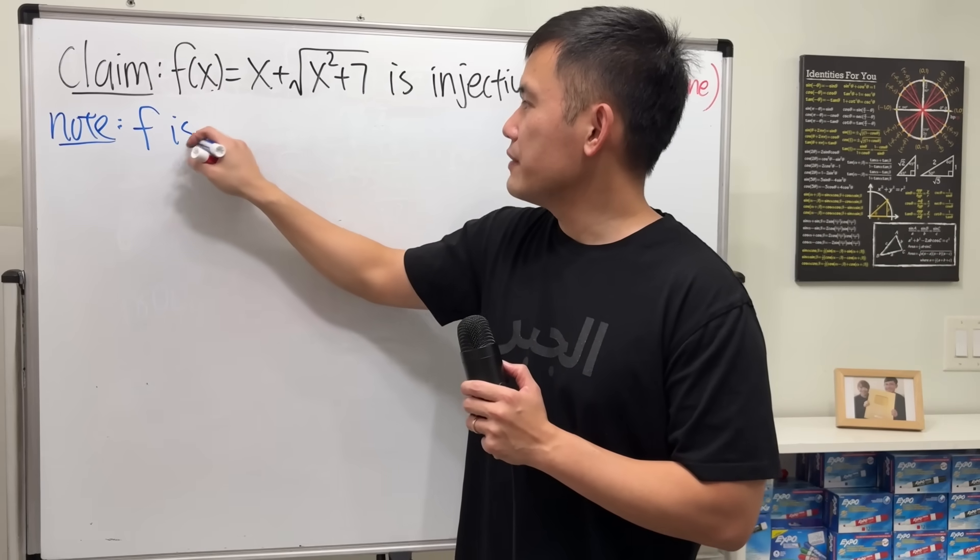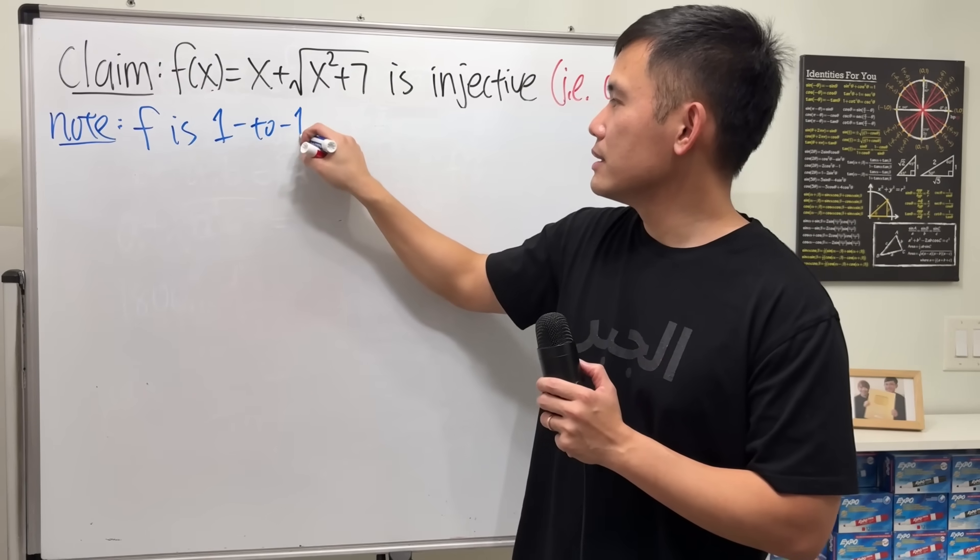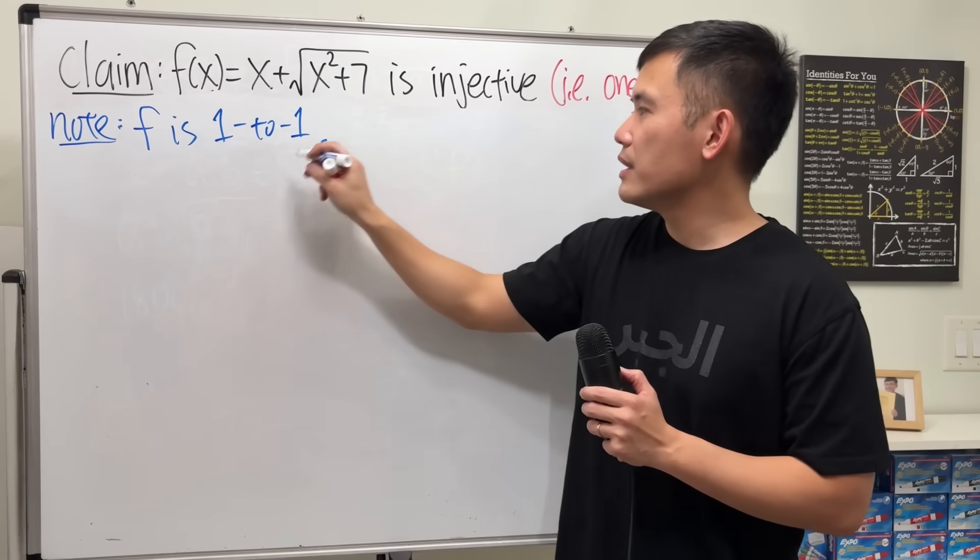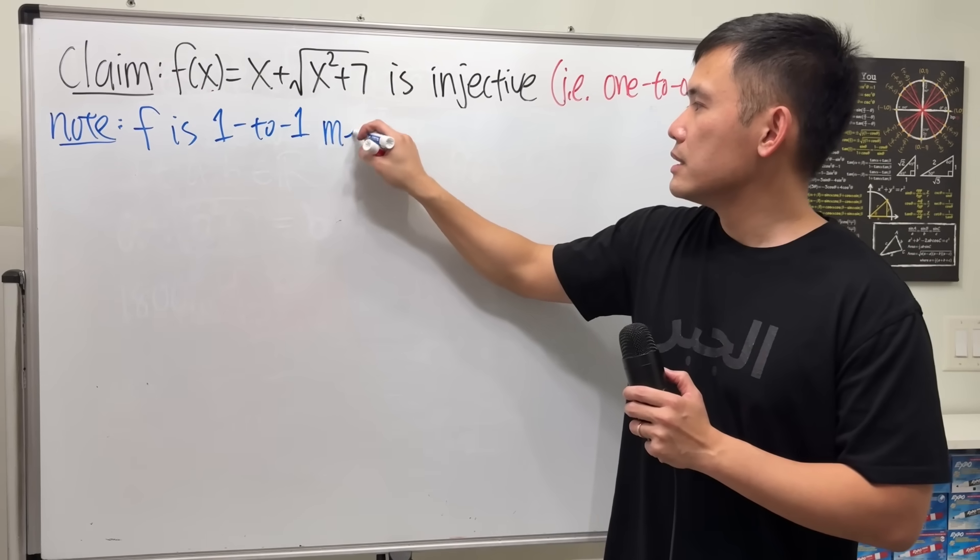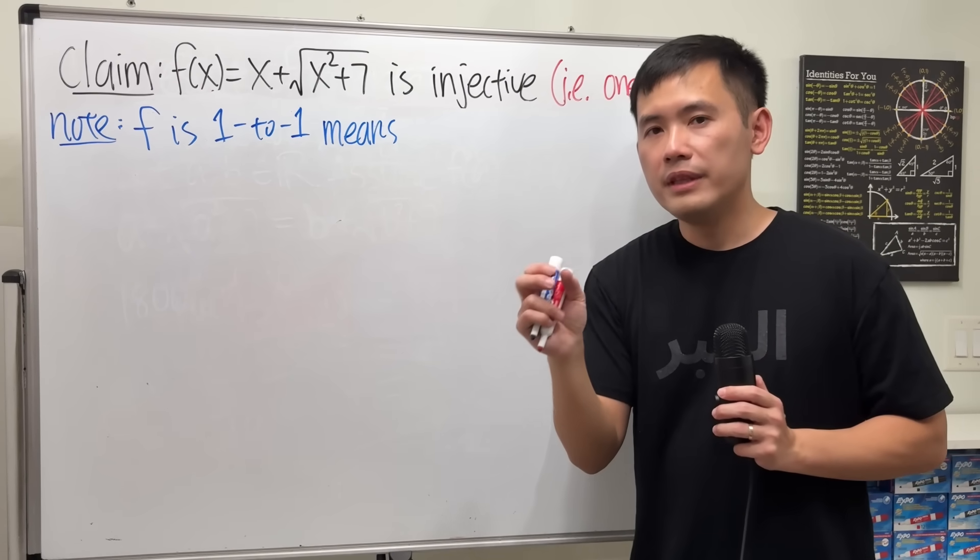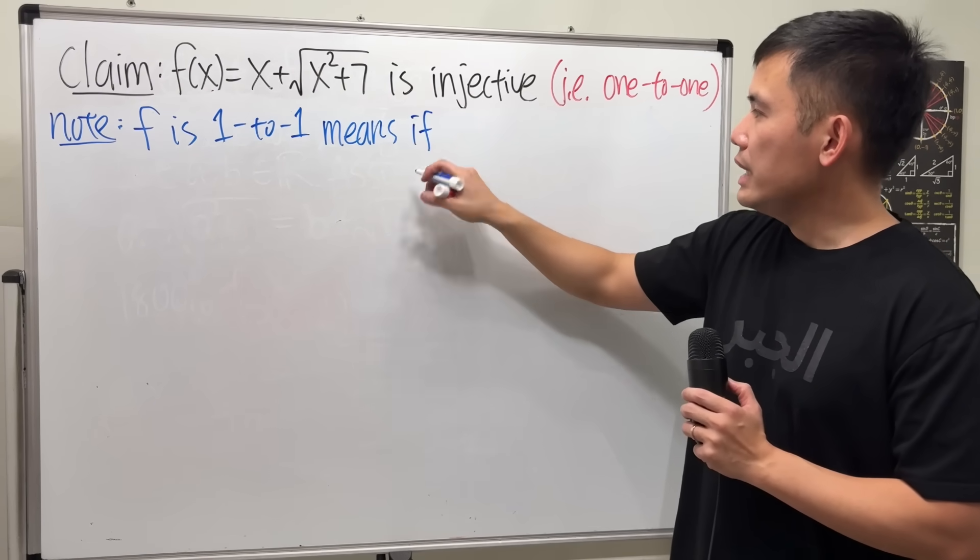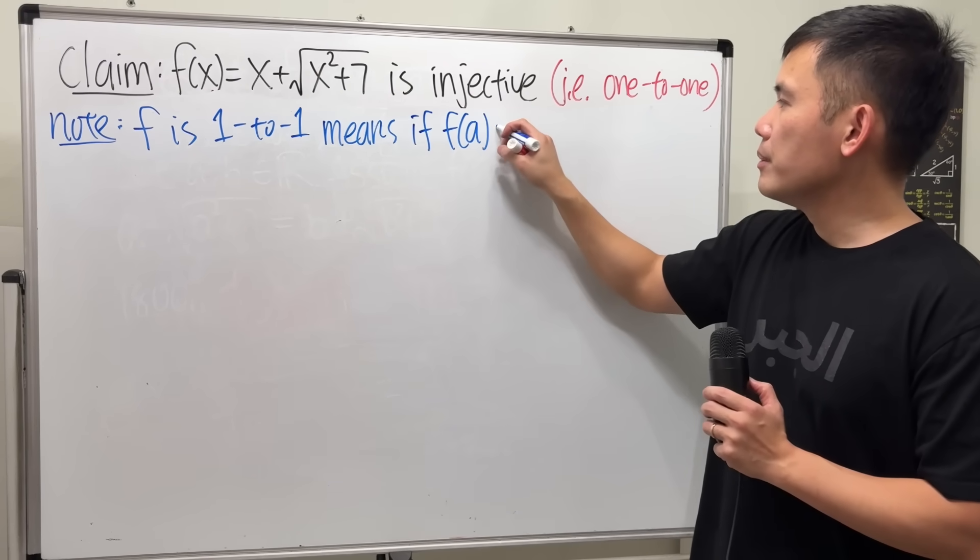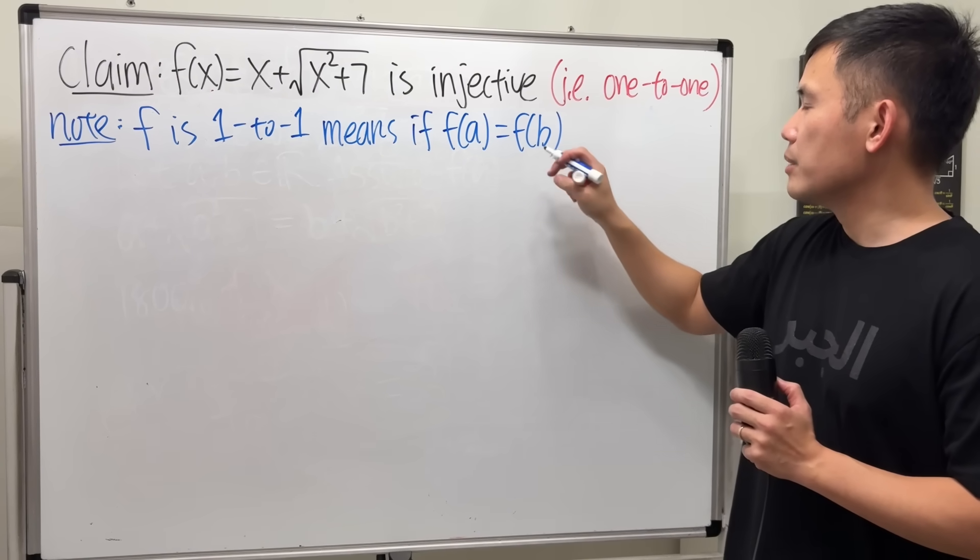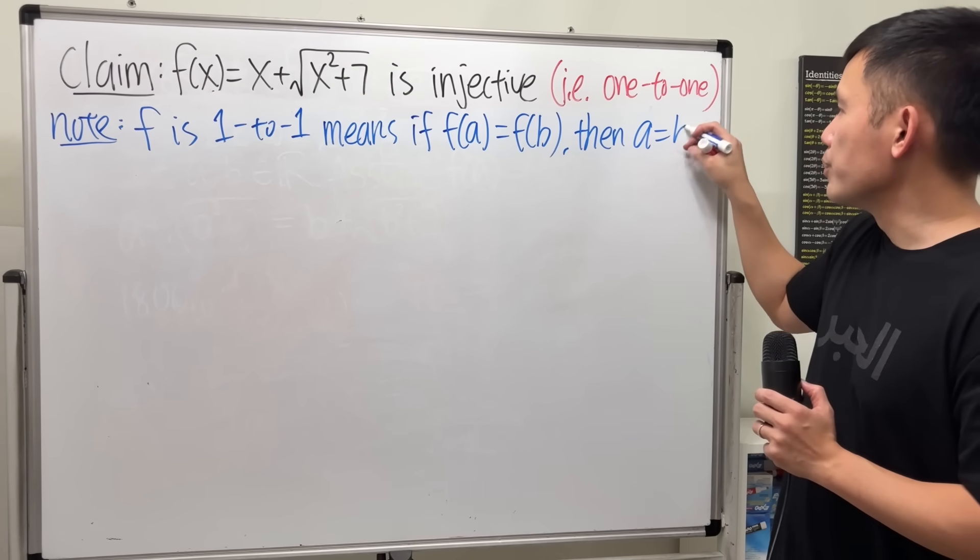I will say f is one-to-one, which is the same as injective. This means if the outputs are the same, then the inputs have to be the same. So we'll just write, if f of some number a being equal to f of some other number b, then we need to have a is equal to b.